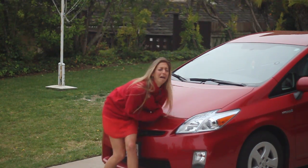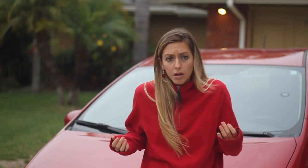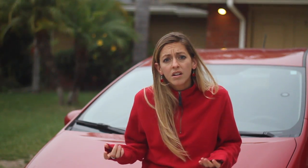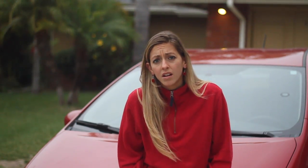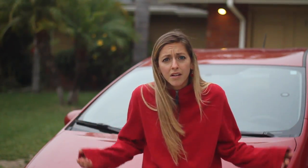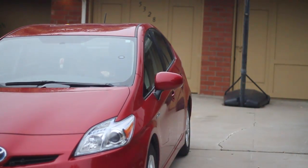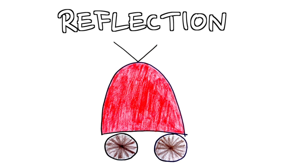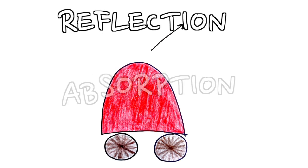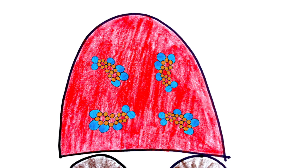You're red now! You're wondering what happened to all the other colors — they were absorbed into the car. When light hits a car, some colors are reflected and some are absorbed into the paint based on the structure of molecules or chemicals in the paint.